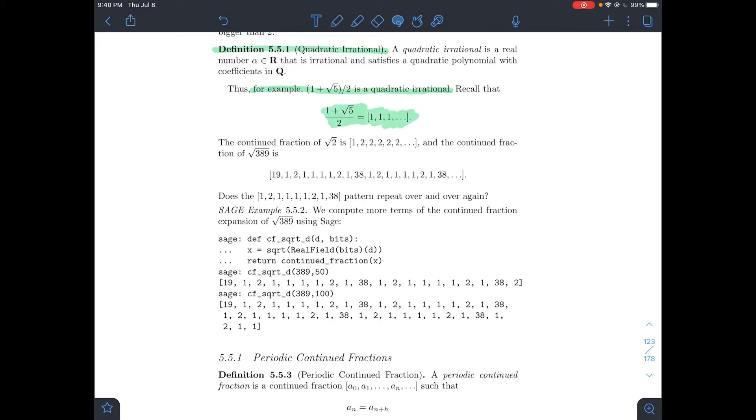The connection is we've already looked at this fraction in a previous video. 1 plus root 5 over 2 has the continued fraction representation that is 1 every time. It's an infinite continued fraction, meaning it doesn't truncate anywhere. It's always just plus 1 on the bottom.